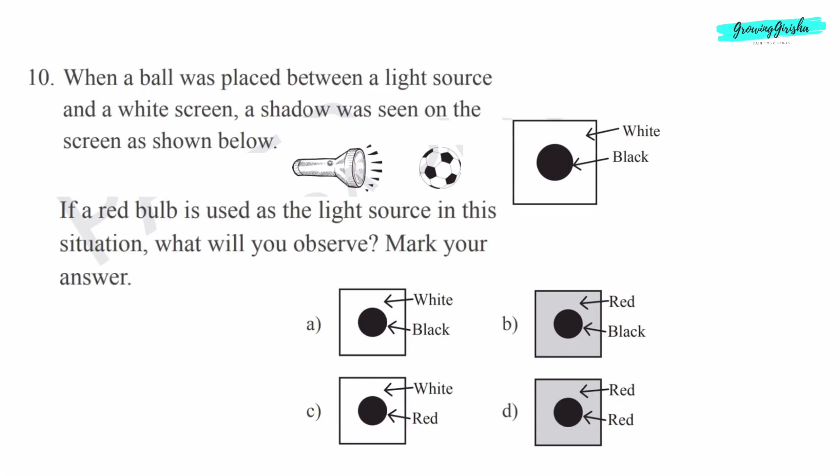Question 10: When a ball was placed between a light source and a white screen, a shadow was seen on the screen as shown below. If a red bulb is used as the light source in this situation, what will you observe? Mark your answer. Option B, you will observe a red background and a black shadow of the ball.